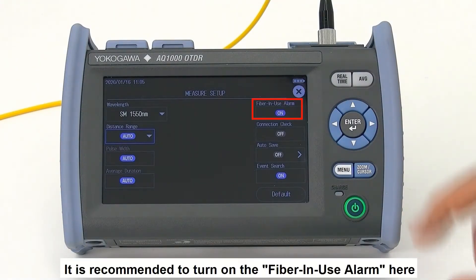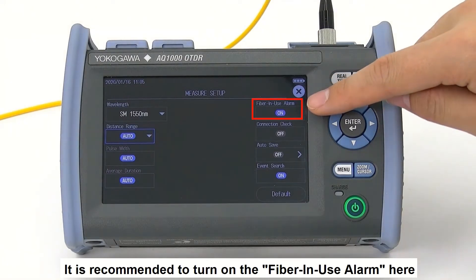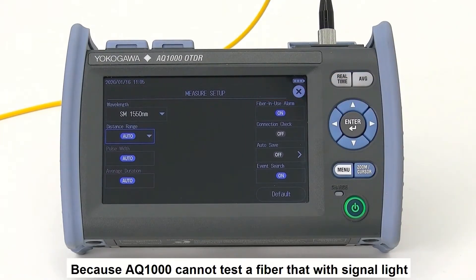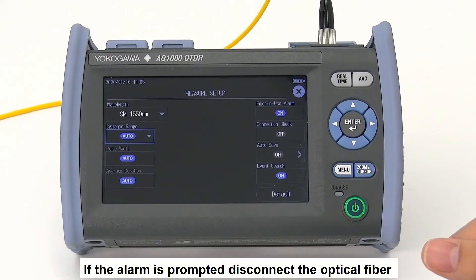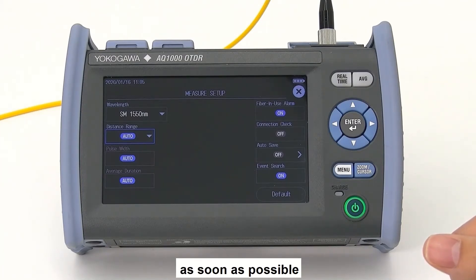It is recommended to turn on the fiber in use alarm here, because EQ1000 cannot test a fiber with signal light. If the alarm is prompted, disconnect the fiber as soon as possible.